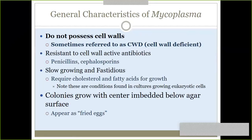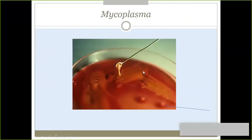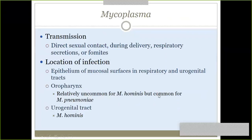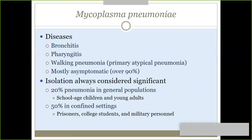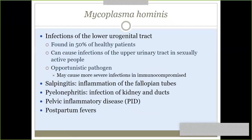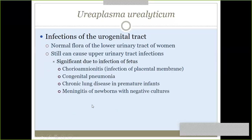When grown, mycoplasma and ureaplasma need agar containing cholesterol and fatty acids. When they do grow, they have a fried egg appearance on agar. Transmission is via sexual contact especially for Mycoplasma hominis in the urogenital tract, and via respiratory secretions for Mycoplasma pneumoniae causing walking pneumonia. Mycoplasma hominis is associated with pelvic inflammatory disease and UTIs. Ureaplasma urealyticum is also found in the urogenital tract with a very similar disease profile to Mycoplasma hominis.